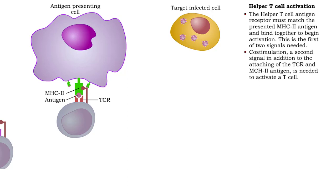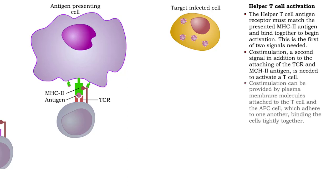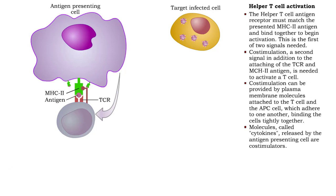A second signal, known as co-stimulation, must also occur. Pairs of molecules attached to the membranes of the T cell and the APC cell help bind the cells tightly together and can provide co-stimulation. Cytokines, small protein hormones, are released by the antigen presenting cell and are co-stimulators.